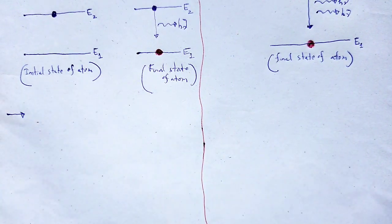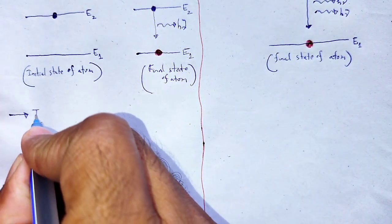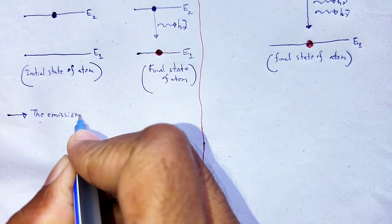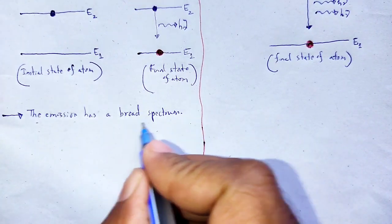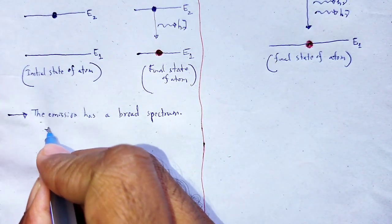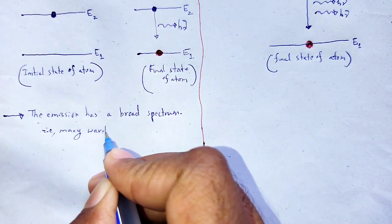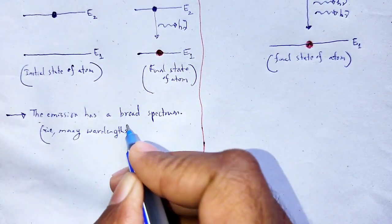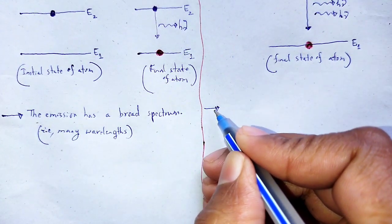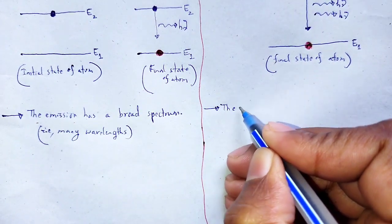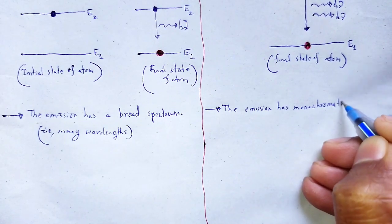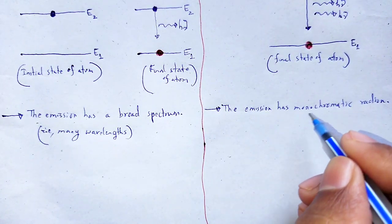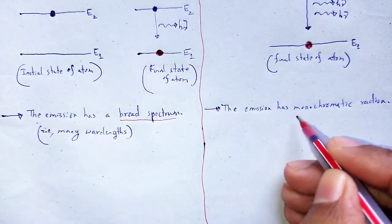In spontaneous emission, the emission has a broad spectrum — that is, many wavelengths. In case of stimulated emission, the emission has monochromatic radiation — a single wavelength. So spontaneous emission gives a broad spectrum, while stimulated emission gives monochromatic radiation.